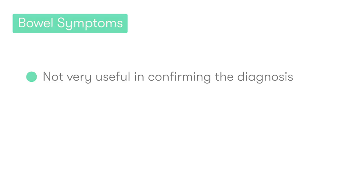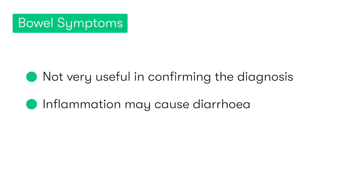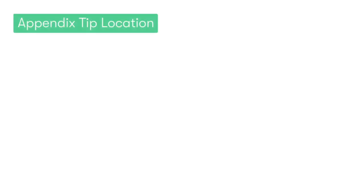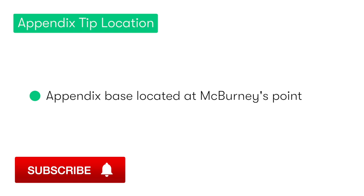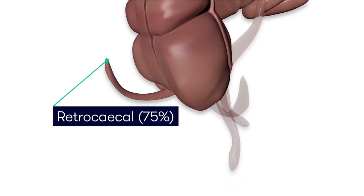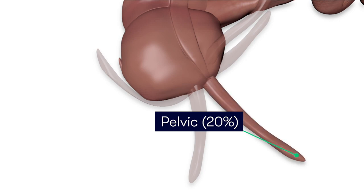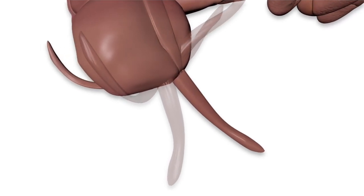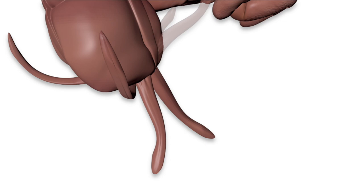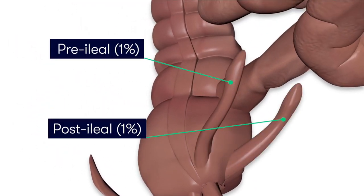Regarding the patient's bowels, this doesn't really help us too much, as inflammation of the appendix can cause irritation in the adjacent colon leading to diarrhoea, but at the other end of the spectrum it may result in an ileus, so the patient may describe having not passed any flatus or faeces at all. The position of the appendix tip is highly variable — the majority of the time it's in a retrosecal position, lying behind the cecum. In 20% of cases the tip lies in the patient's pelvis, with paracecal and subcecal making up 2% and 1.5%, and pre-ileal and post-ileal 1% and 0.5% respectively.